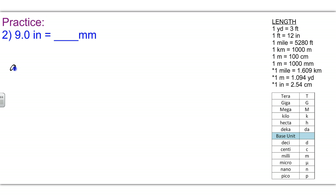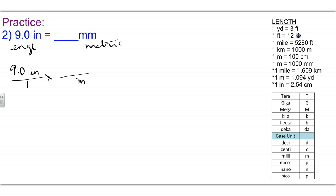Number 2: 9.0 inches over 1. Times, draw a line, bring down inches. Inches is an English unit, so we're starting with an English unit and trying to end up on a metric unit. In the English system, we need to get to one of these three English units — mile, yard, or inches — in order to convert to the metric system. Fortunately, inches will convert to centimeters, so 1 inch equals 2.54 centimeters. Times, draw a line.